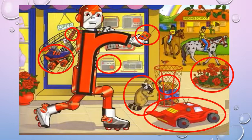Hello! I am Red Robot! I say R! Look at all these pictures and find the ones that begin with sound R. Yes! Red racing car, raccoon, rocket, roses, remote, radio, ruler, roller skates!